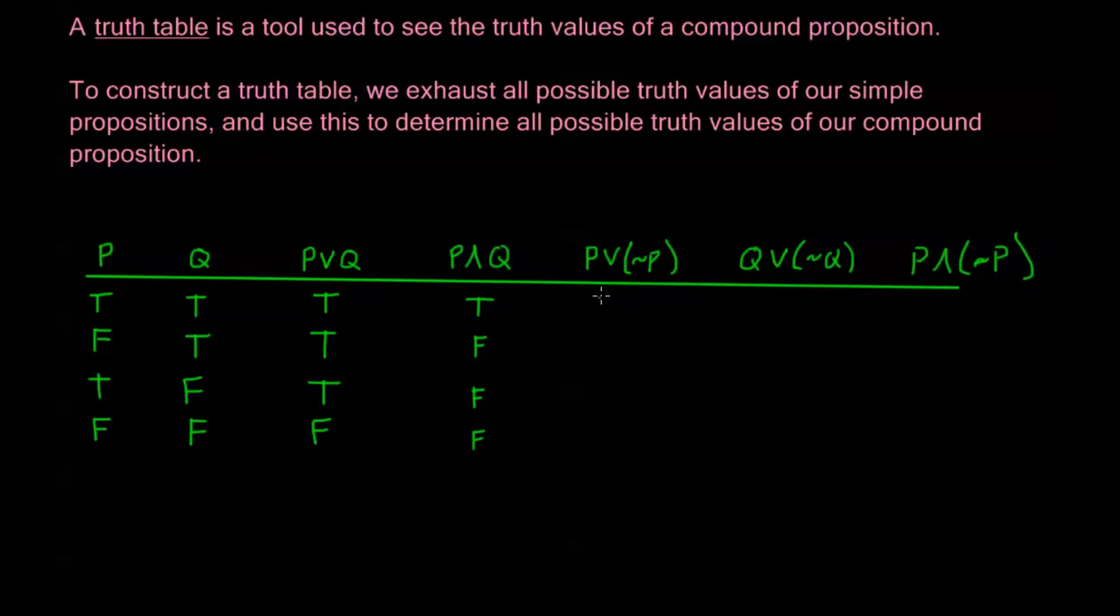These last three are pretty easy. I have this P or not P. What I'm saying is either P is true or P is not true. Well, that's going to be true all the time, isn't it? We see in the first and third, I have P is true, and in the second and fourth, I have P is false, which is the second side, not P. And that's the same thing here with Q. Q or not Q, that's always going to be true as well. Either Q is true or Q is not true. This last one, P and not P, means that P is true and P is false, which, of course, is ridiculous. We know this is always going to be false.